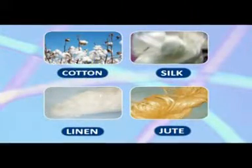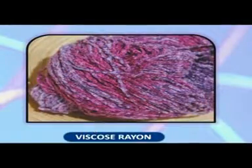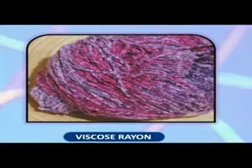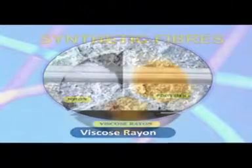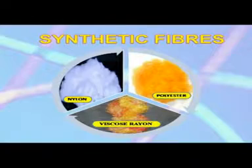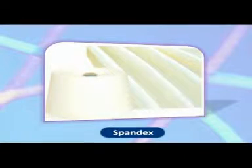These include the natural fibers like cotton, silk, linen, and jute. The second category comprises man-made fibers based on natural feedstock, the major fiber in this category being viscose rayon. The third important category is that of synthetic fibers and includes polyester, acrylic, modified acrylic, Lycra, Spandex, etc.